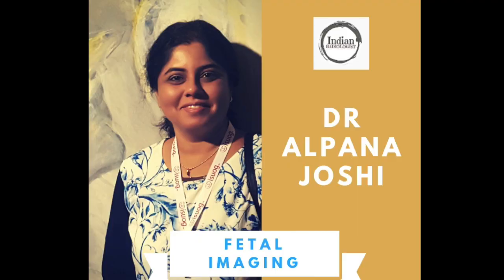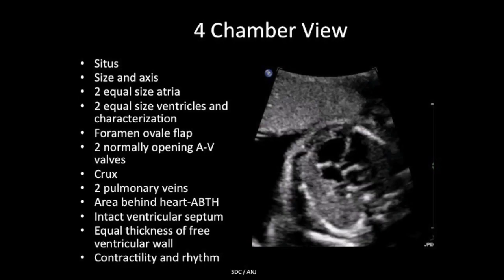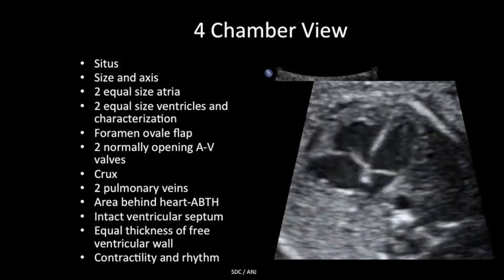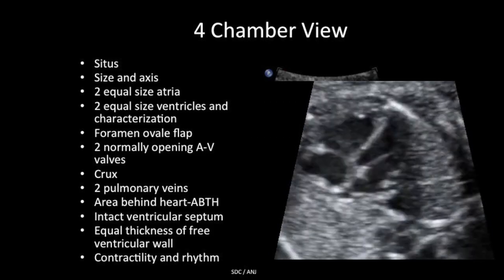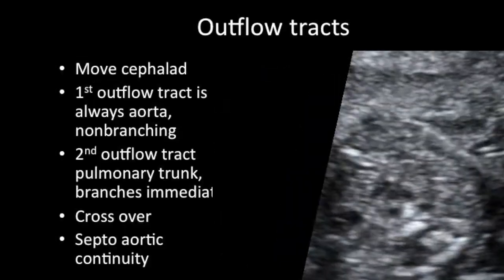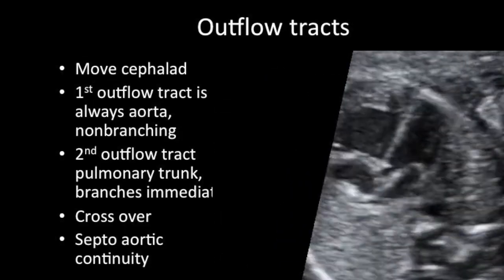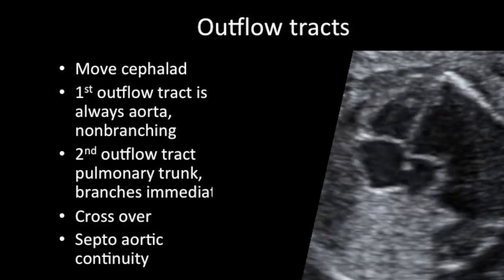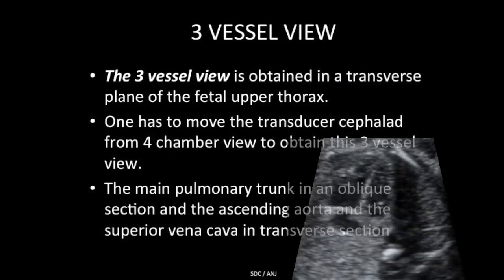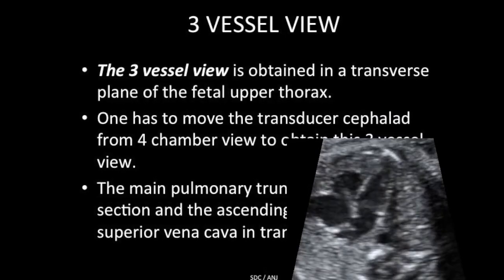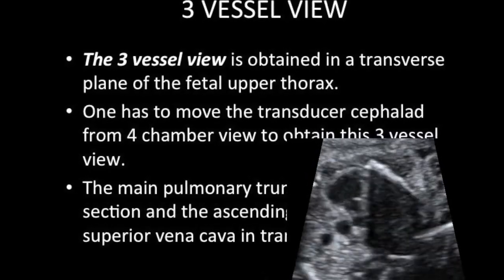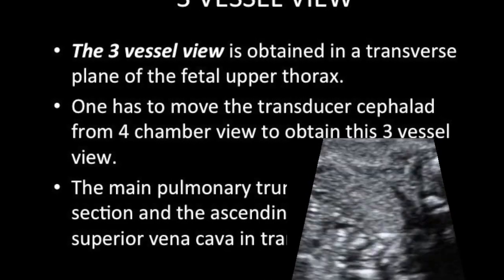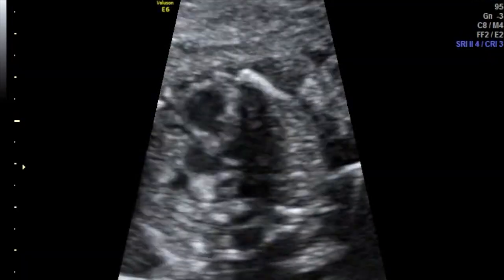We start with our last talk in the series of fetal heart assessment during anomaly scan, which is the three vessel trachea view. We have mastered the four chamber view checklist and seen the outflow tract views checklist. Once you have done these two views, we come to the three vessel view, which is obtained in a transverse plane of the fetal upper thorax. One has to move the transducer a little cephalad from the four chamber view to obtain this three vessel view.